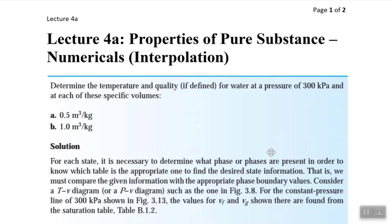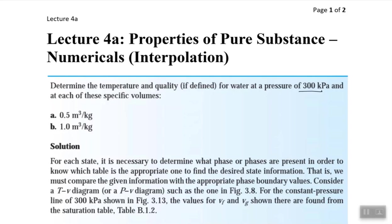Today we'll also be introducing one of the new concepts which is called interpolation. Before we go to the interpolation, let's read out the question first. The question says: determine the temperature and quality if defined for water at a pressure of 300 kPa. So we have been given two different properties — one is the pressure and one is the specific volume.